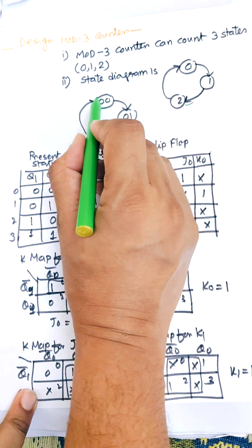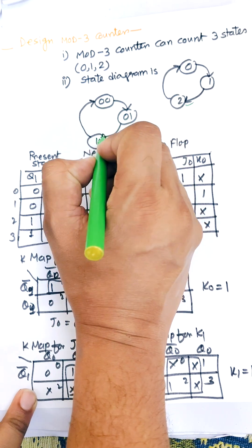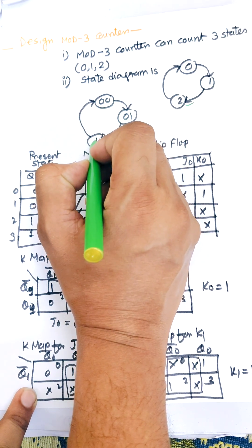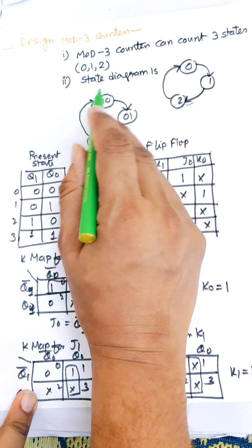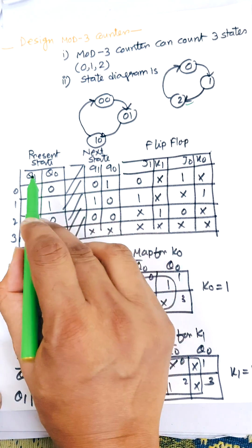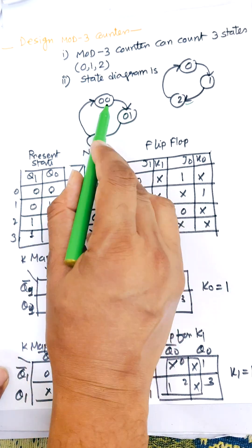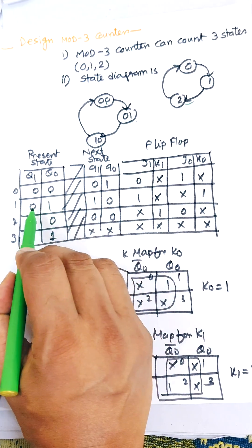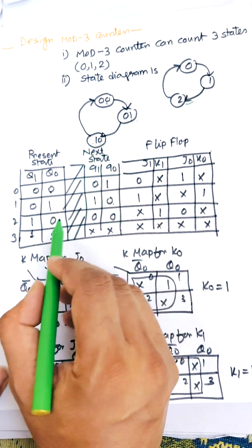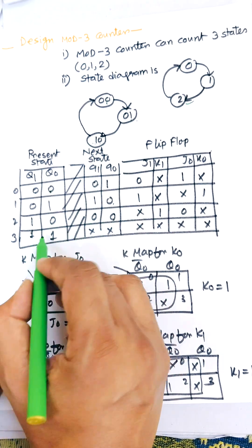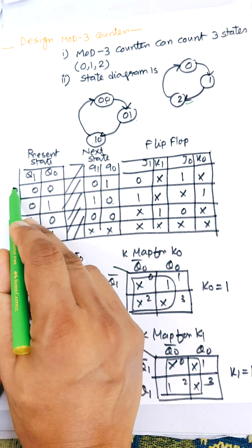This is the mod 3 counter state table. Present state 0,0 — next state is 0,1. Present state 0,1 — next state will be 1,0. And if present state is 1,0, it will go to 0,0. So this is the state table for the mod 3 counter. Now we need to draw the full table.